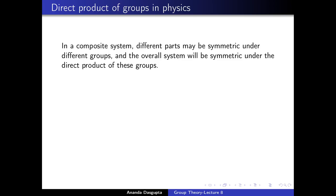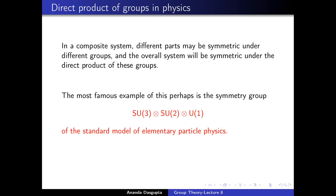One very important example, which almost everybody has heard of, is the SU(3) × SU(2) × U(1) symmetry group, which is the symmetry group for the standard model of elementary particle physics. By the time this course ends, I hope to give you a basic understanding of what this symmetry group means in terms of the standard model. Now that I have given you enough reason to study direct products — both from physical applications and from the mathematical structure of representation theory — let us return to the mathematical properties of the direct product of two groups.